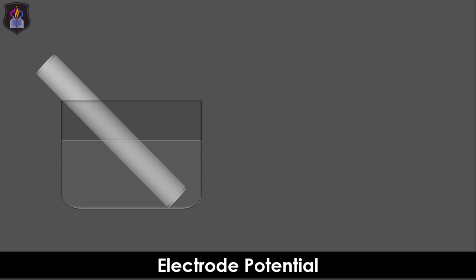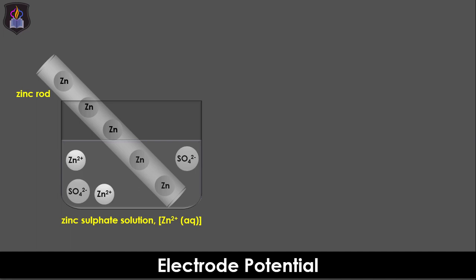Ever wonder what happens when a zinc rod is dipped in a solution of a zinc salt such as zinc sulfate or zinc nitrate? The zinc rod is made up of zinc atoms while the zinc sulfate solution contains the zinc and sulfate ions. The zinc atoms in the rod spontaneously undergo oxidation by losing two electrons each to form zinc ions, which go into the solution to increase the concentration of the positive ions, thereby making the electrolyte electrically positive.